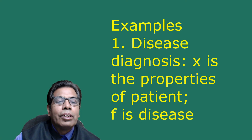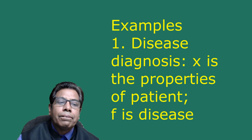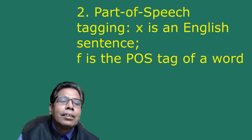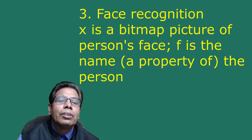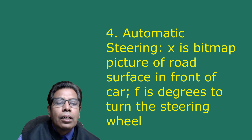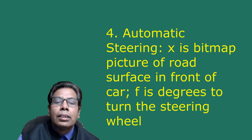Some examples of target functions: in disease diagnosis, x is properties of the patient and f is the disease. In part-of-speech tagging, x is an English sentence and f is the part-of-speech tag of a word. In face recognition, x is the bitmap picture of a person's face and f is the name or property of the person. In automatic steering, x is the bitmap picture of the road surface in front of the car and f is the degree to turn the steering wheel.